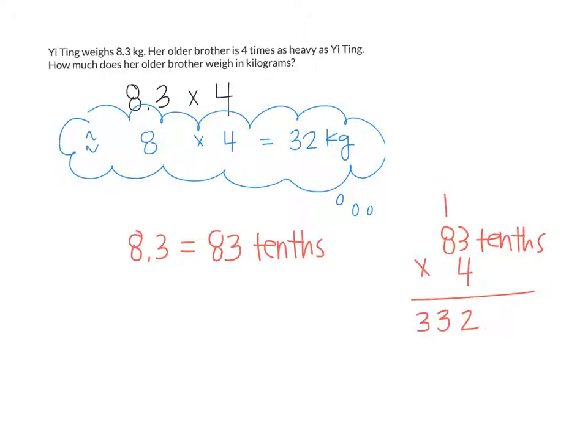But what was my estimation? I know my answer should be pretty close to thirty-two. Is three hundred thirty-two close to thirty-two? So if I wrote three hundred thirty-two kilograms, I would know that's not correct. But because I know my answer should be pretty close to thirty-two, where would I need to put my decimal point? In order to make three hundred thirty-two pretty close to thirty-two, where would I need to put my decimal point? Right here.